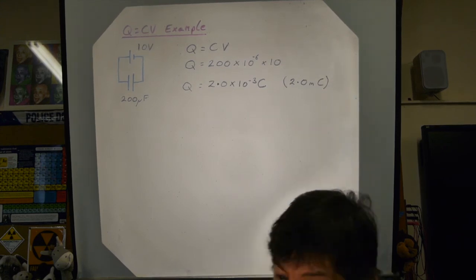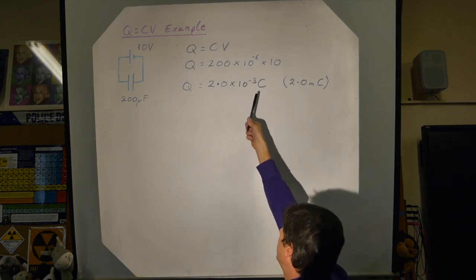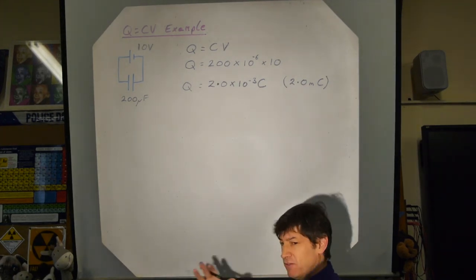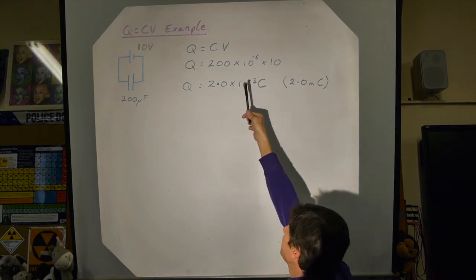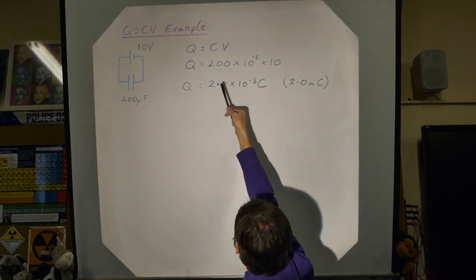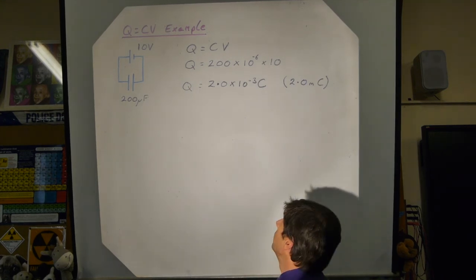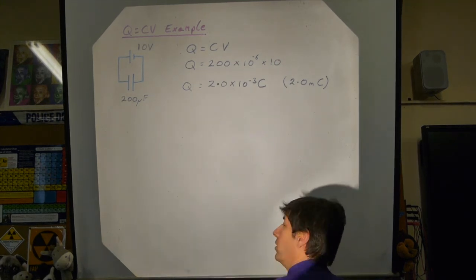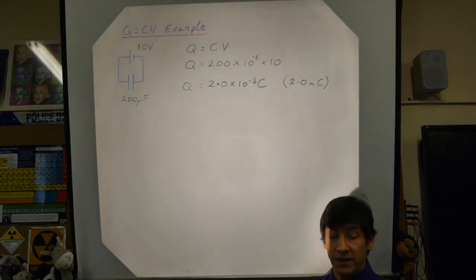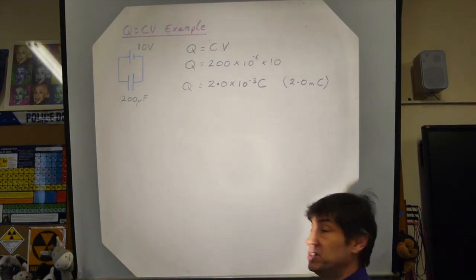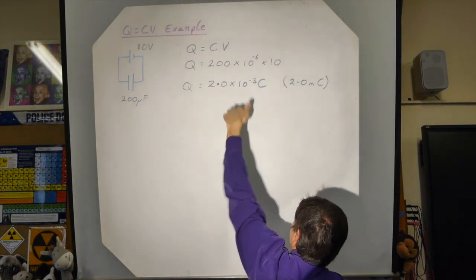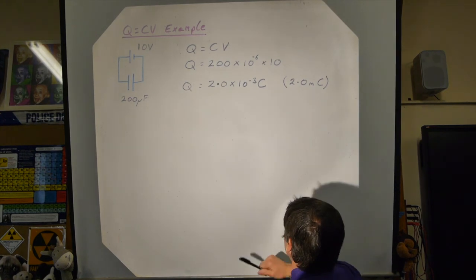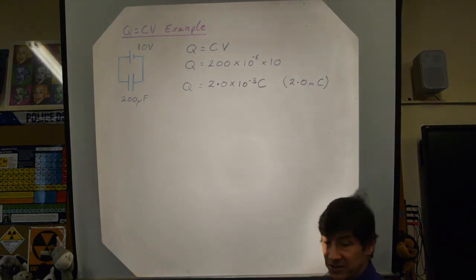I'm fairly obsessive about engineering notation — I find it much easier to understand. Writing 2 millicoulombs is so much easier than other forms, and that's kind of what's written on the can of a capacitor and on circuit diagrams. These powers of 10 in steps of minus 3, minus 6, minus 9, minus 12 are very useful.